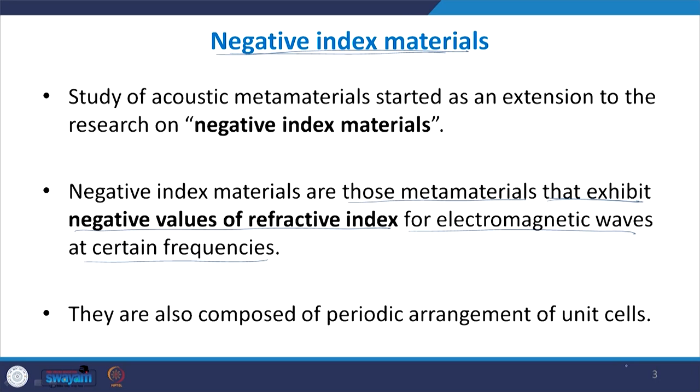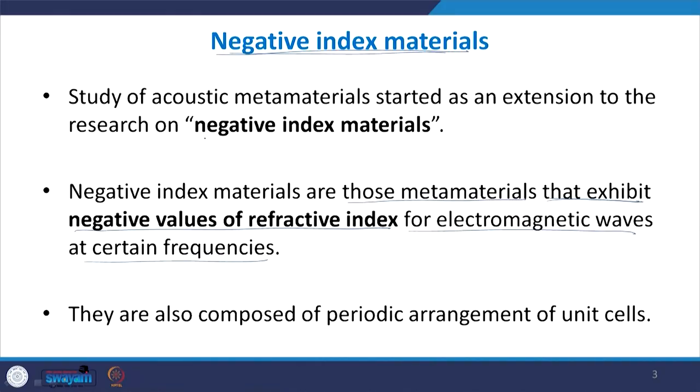Usually most classic media have a positive refractive index. For example, in optics most lenses have positive refractive index, but certain materials could be made to have negative refractive index at certain desired frequencies. Here the refractive index is a function of frequency, and at certain frequencies the value of refractive index will become negative. Those materials were called negative index materials.